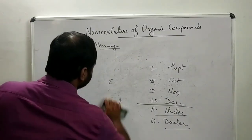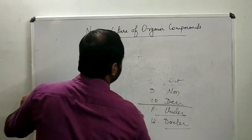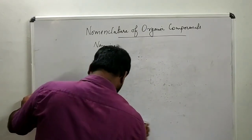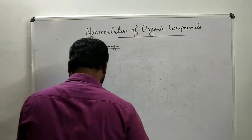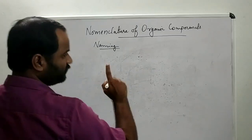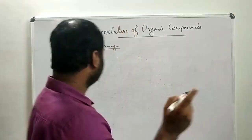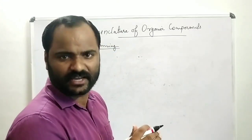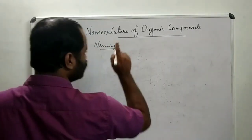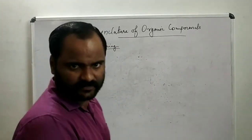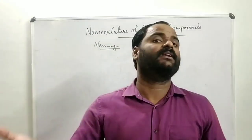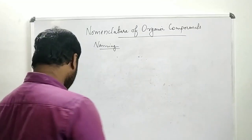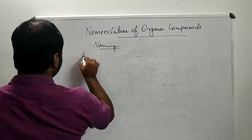Now we have to discuss prefixes and suffixes — what are prefixes and what are suffixes. One more thing before that: if a compound contains five carbon atoms, then the word root should be pent. If a compound contains seven carbon atoms, the word root is hept. Now we can discuss suffix.